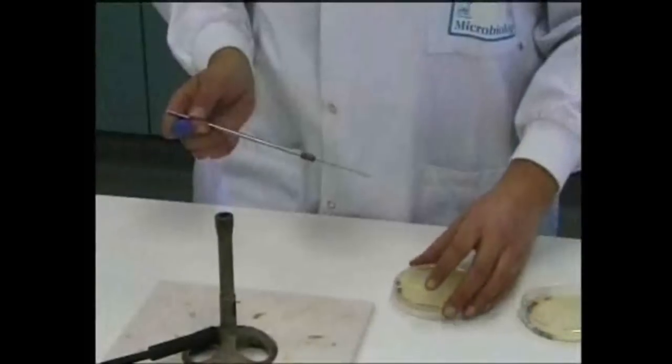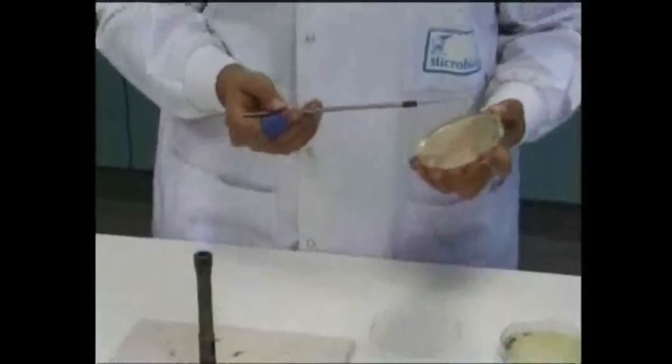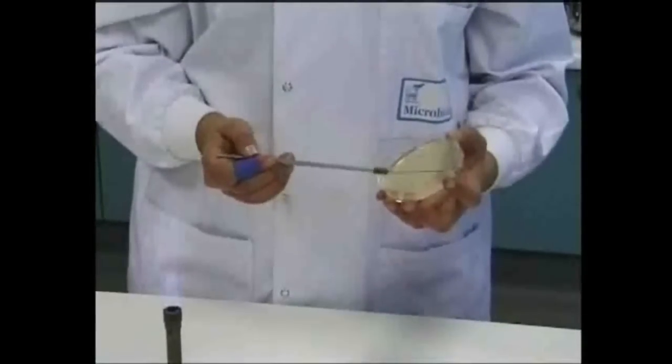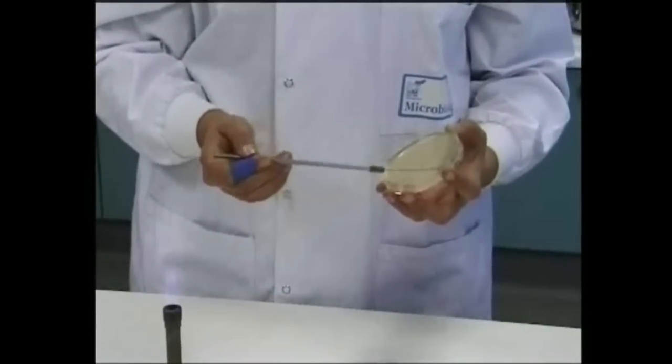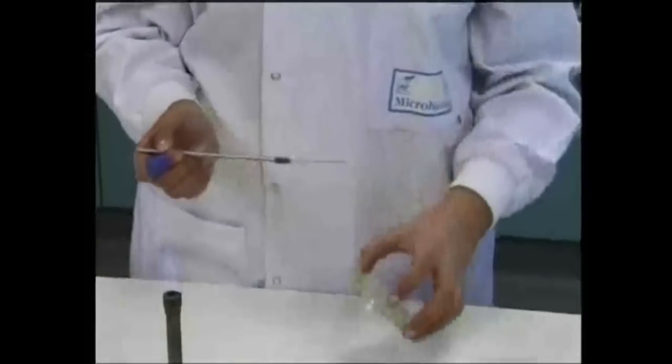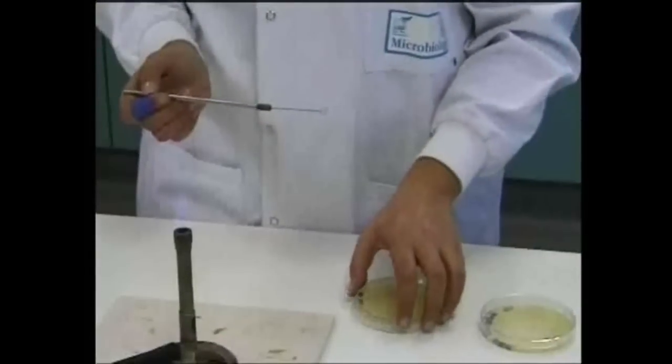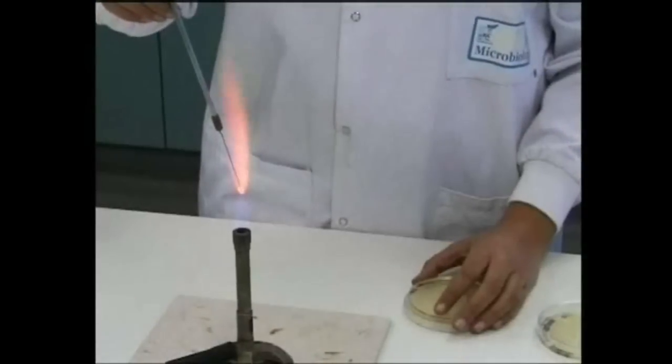It's important not to press down on the surface of the medium, as this can cause gouging and possibly unintentional growth of anaerobes below the surface of the agar. After streaking the first area of the plate, the lid should be replaced and the loop flamed and allowed to cool.